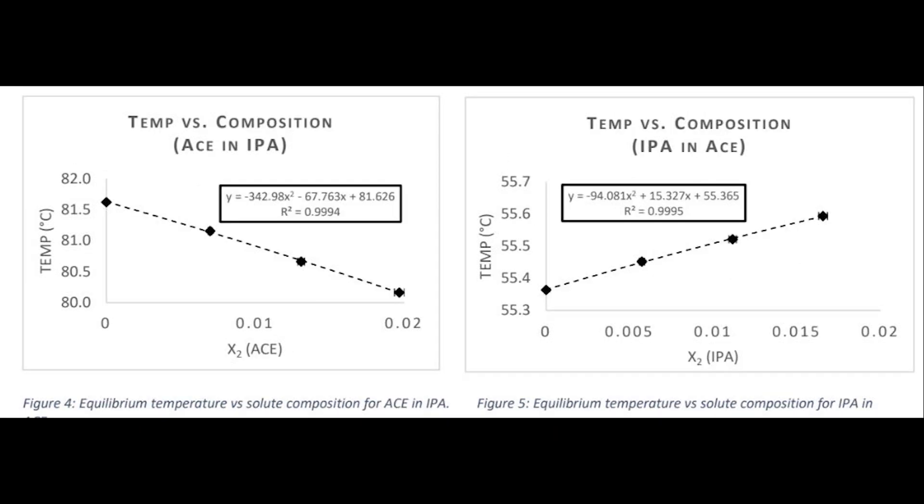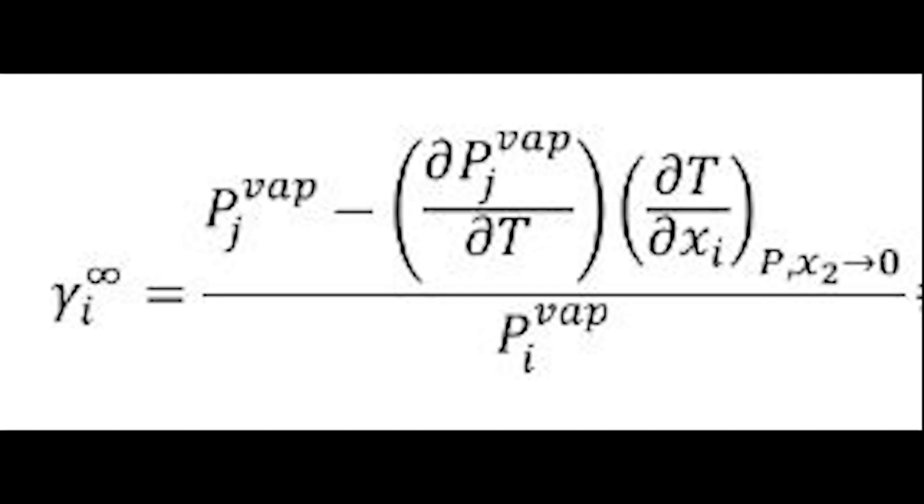After collecting experimental data, plots like figure four and five can be made for each system. One point for the solvent and three other points for the solute injections. For each of the plots, the total mole fraction of the solute after additions is plotted against the equilibrium temperature. These plots are important because it relates back to the expression for the infinite dilution activity coefficients. The B term in this polynomial equation on each plot represents the dT over dx term within this equation. The other terms in this equation are known because of Antoine's equation.